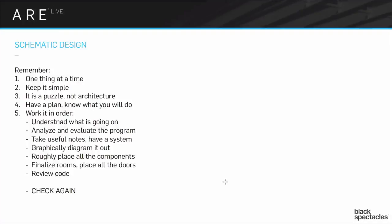Remember: one thing at a time, keep it simple. It's a puzzle, not architecture. Have a plan — know what you're going to do, know how you're going to take notes, practice the idea. If you've done one practice vignette, do it again but with a different note-taking system. Force yourself to try different ways to know how you'll approach this, then work through it in order — analyze it first, do a quick sketch version, move through it. Build it up because you don't want to dive straight in placing rooms and then realize 40 minutes in that you made a mistake.